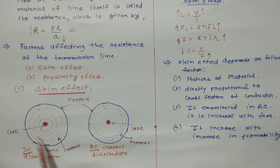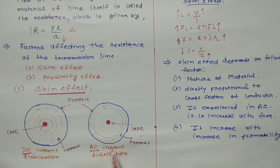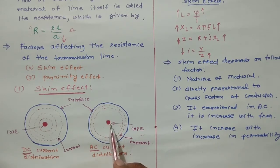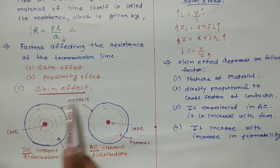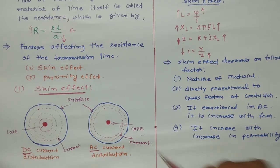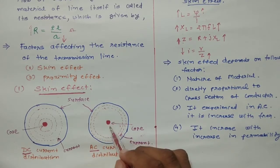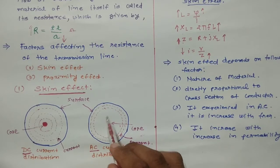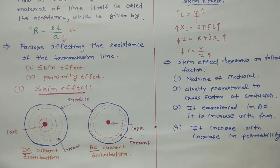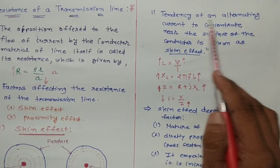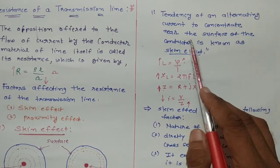In the AC case, the current is not uniformly distributed around the conductor — it is larger at the surface of the conductor. The tendency of an alternating current to concentrate near the surface of the conductor is known as skin effect.